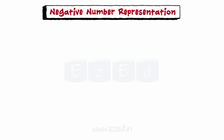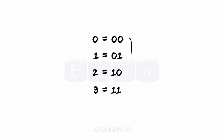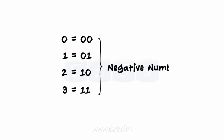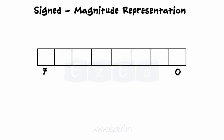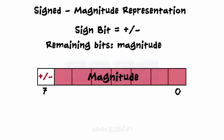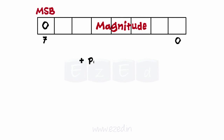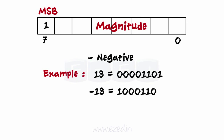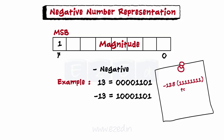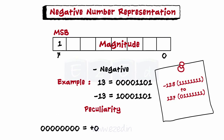Moving on to negative number representation. We have discussed binary representations of non-negative integers; however, one must often deal with negative numbers. One way is the signed magnitude representation: use a single bit to represent the sign of the number — plus or minus — and the remaining bits to represent the magnitude. A most significant bit of zero represents plus, while a most significant bit of one represents minus. For example, an eight-bit signed magnitude representation of 13 is 00001101, while for minus 13 it is 10001101. Note that using eight-bit signed magnitude, one can represent integers in this range. Signed magnitude has one peculiarity: the integer zero can be represented in two ways.